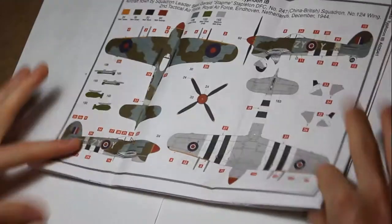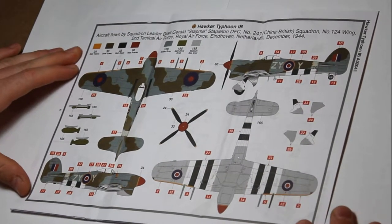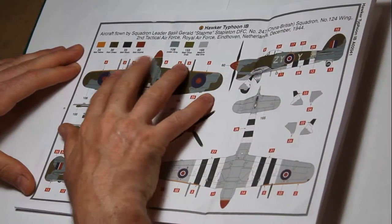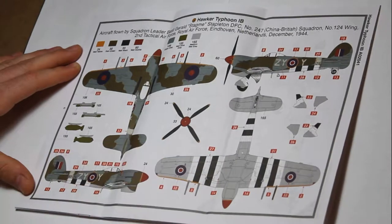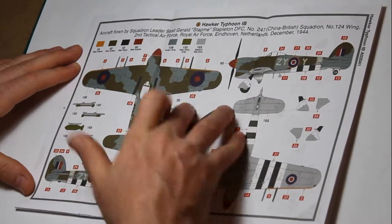And then we go into the markings, which are very good and very clear from Airfix. All Humbrol colours, so you have to look online to get different, if you're not using Humbrol, to colour match. But it is RAF colours, so it's the late war colours, with the dark green and the ocean grey, with the medium sea grey underneath.